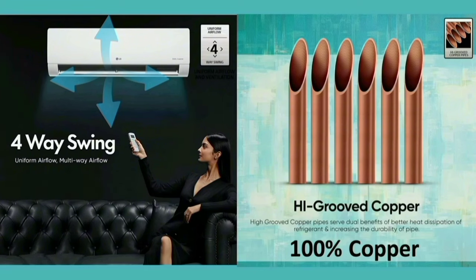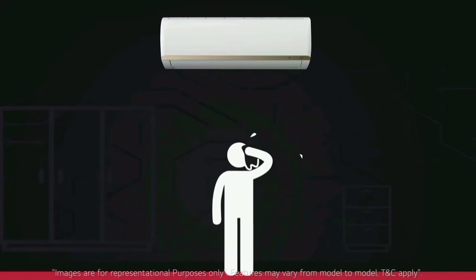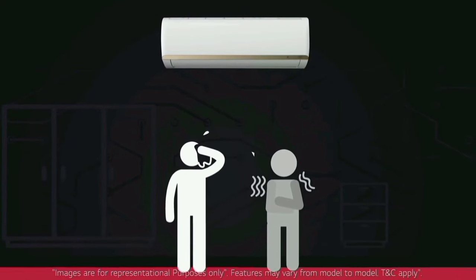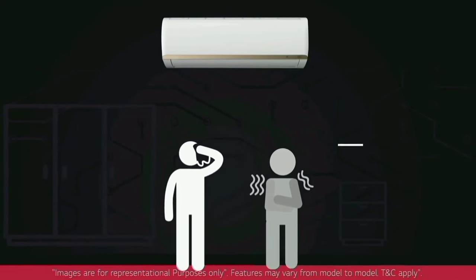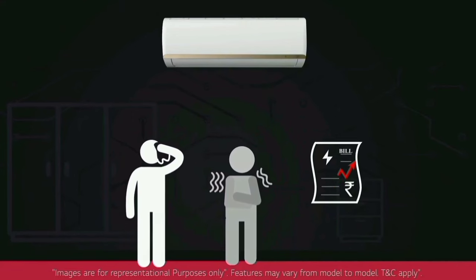This AC has a 4-way swing. You can direct the airflow up, down, left, or right — four directions — to distribute cool air throughout the room. In the worst case, it can also direct straight airflow across the room.